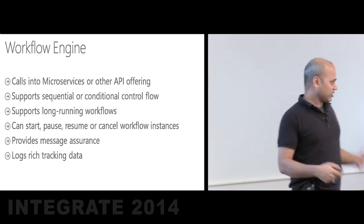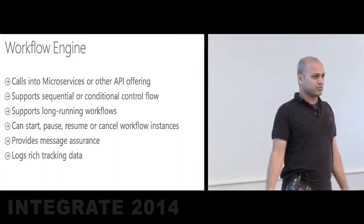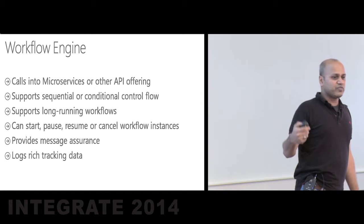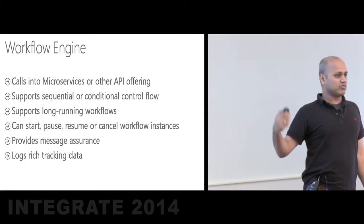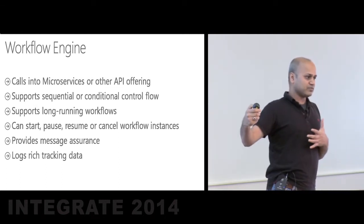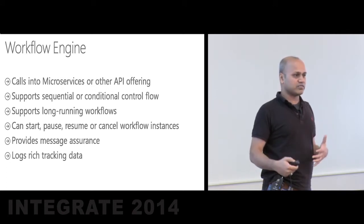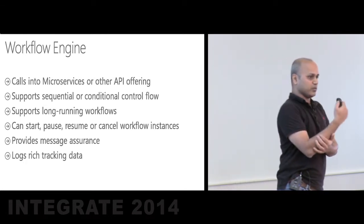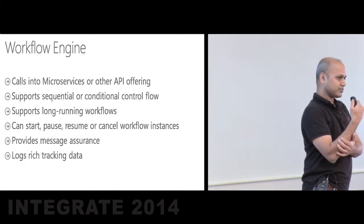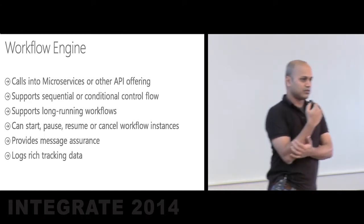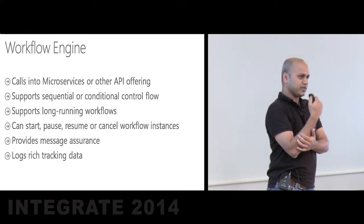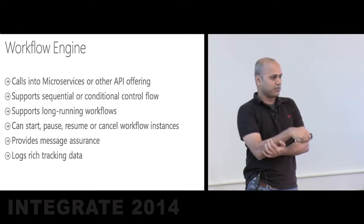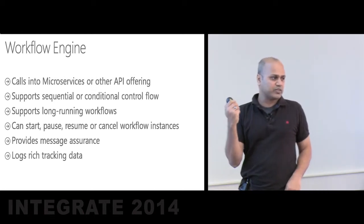Let's focus on orchestrating a business process using these microservices. A BA's primary job is configuring a microservice — for example, providing credentials to connect to Facebook. They use the data across further microservices, configure them, and use conditional workflows to compose a business process. All this functionality is available in a web-based process designer. As part of the platform, we are shipping a very powerful workflow engine.